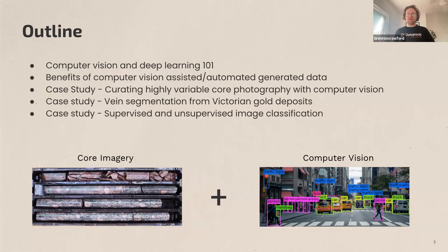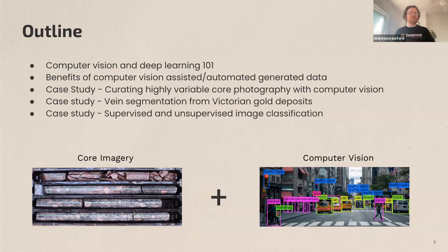Essentially, visually what we're doing today is combining the humble core photograph — or potentially some other kinds of core imagery — with the field of computer vision, which allows us to see imagery with computers and generate value from it.